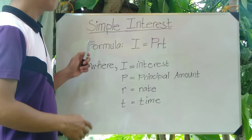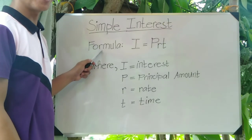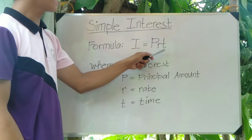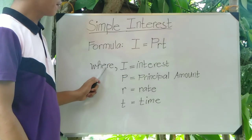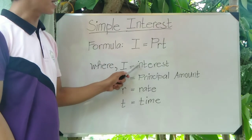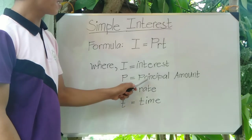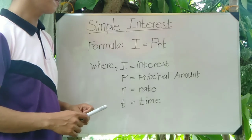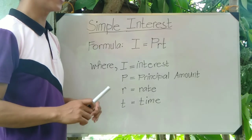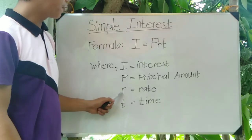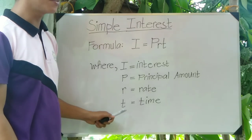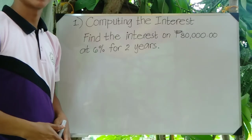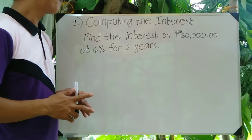Simple interest has the formula I equals P times R times T, where I represents the interest, P for the principal amount — the principal amount refers to the money you borrowed from a certain individual or a certain company — R for rate, and T for the time.